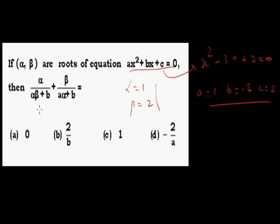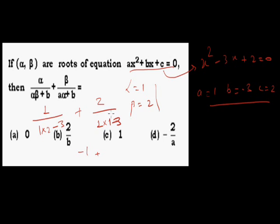Let's substitute: alpha/(A·alpha·beta + b) = 1/(1·1·2 + (-3)) = 1/(2 - 3) = 1/(-1) = -1. Then beta/(A·alpha + b) = 2/(1·1 + (-3)) = 2/(1 - 3) = 2/(-2) = -1. The total is -1 + (-1) = -2.